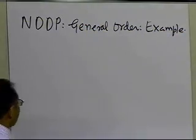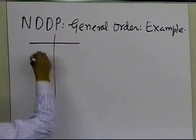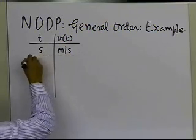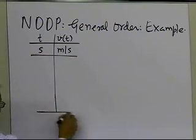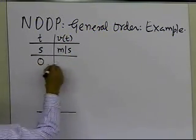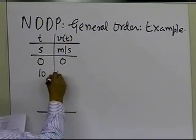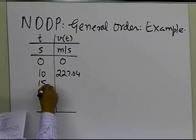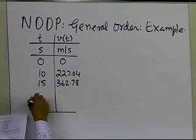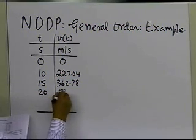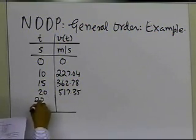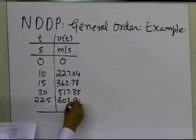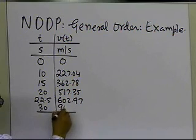Suppose somebody is giving you velocity versus time data — velocity is given in meters per second, time is given in seconds — and somebody is giving you six data points: (0, 0), (10, 227.04), at 15 it is 362.78, at 20 it is 517.35, at 22.5 it's 602.97, and at 30 it is 901.67.